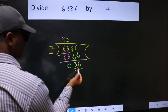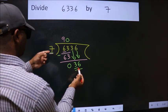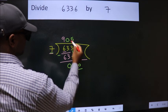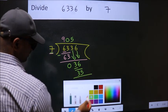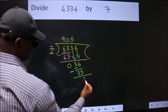A number close to 36 in the 7 table is 7 fives, 35. Now we subtract. We get 1.